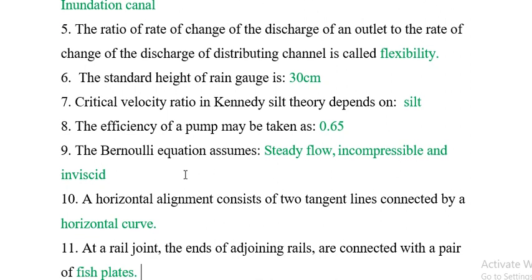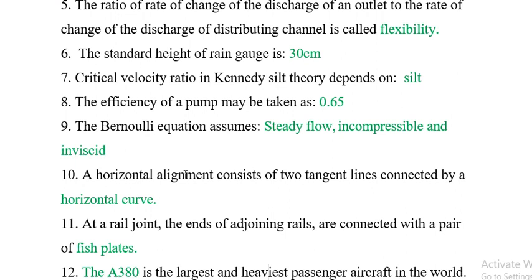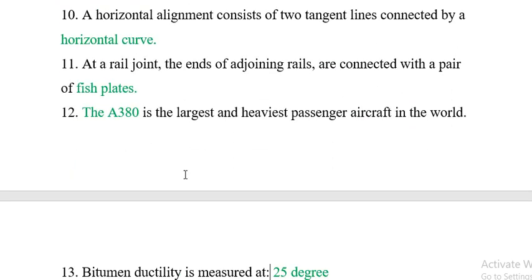Question 9: The Bernoulli equation assumes steady flow of an incompressible and inviscid fluid. Question 10: A horizontal alignment consists of two tangent lines connected by a horizontal curve.